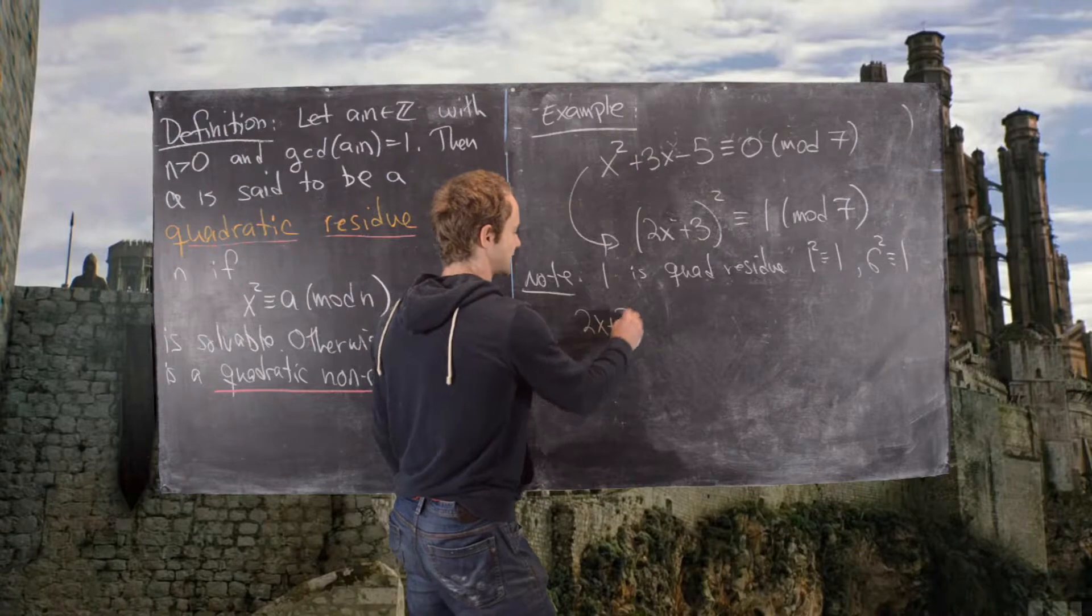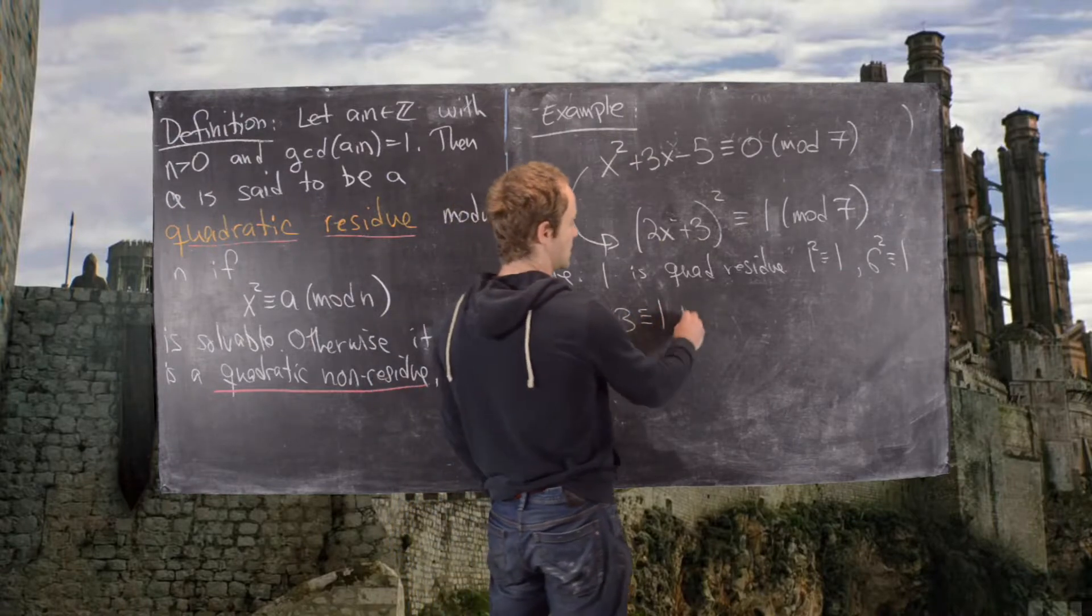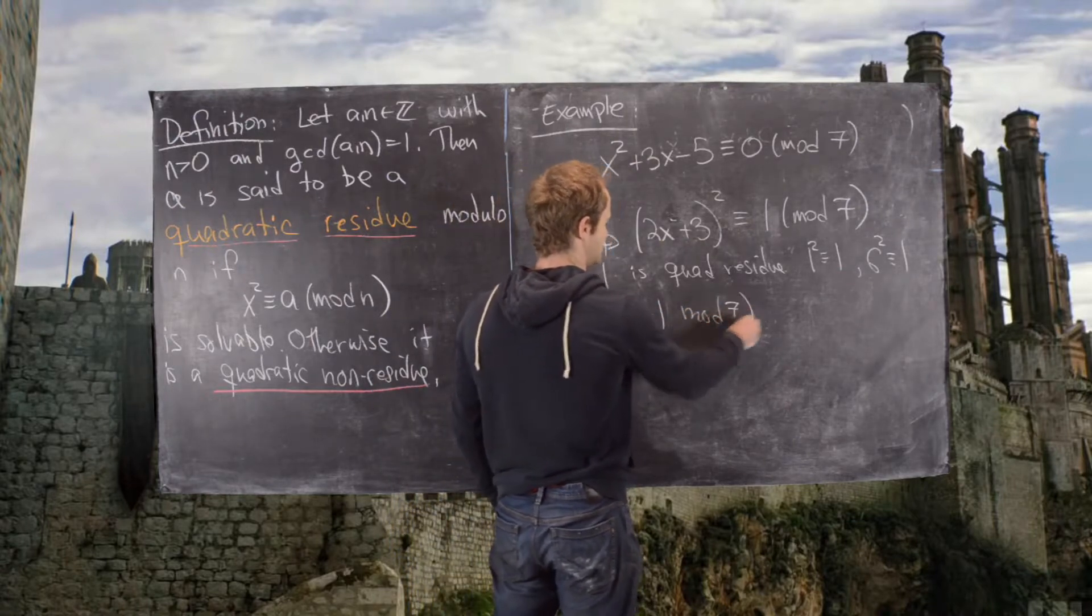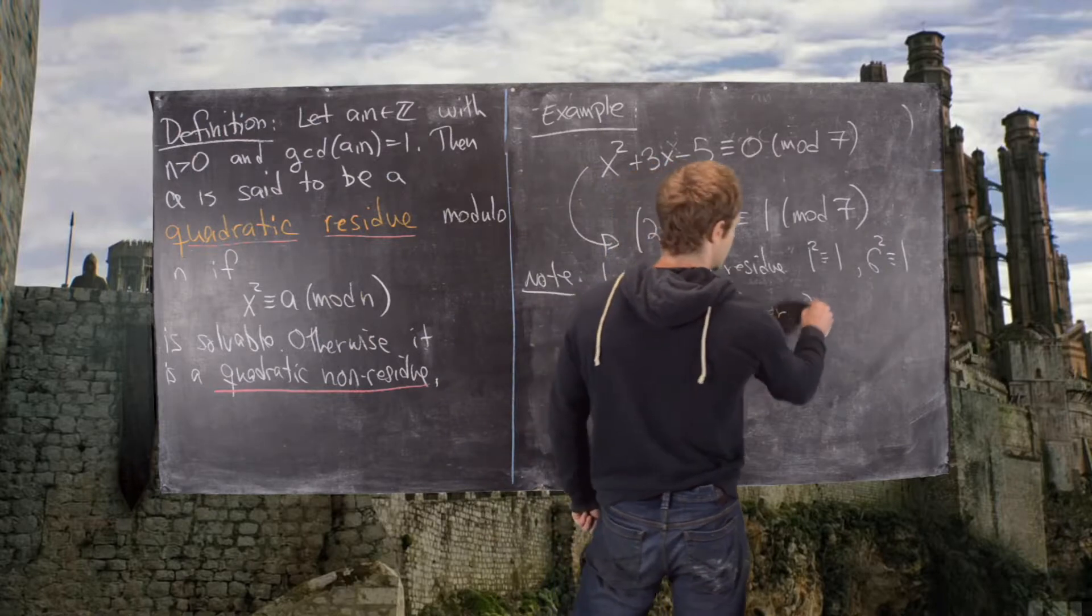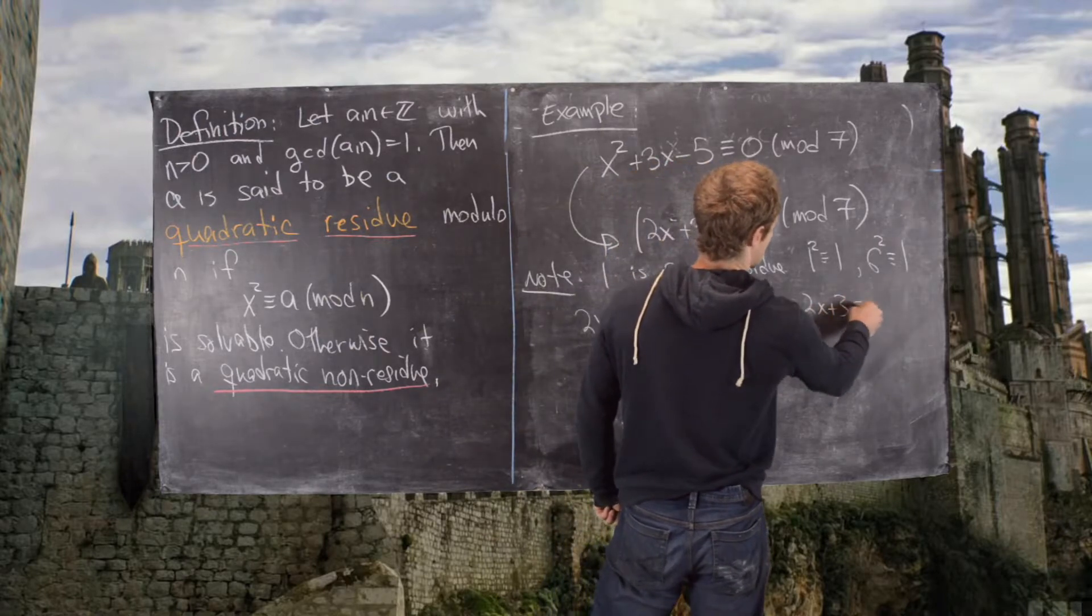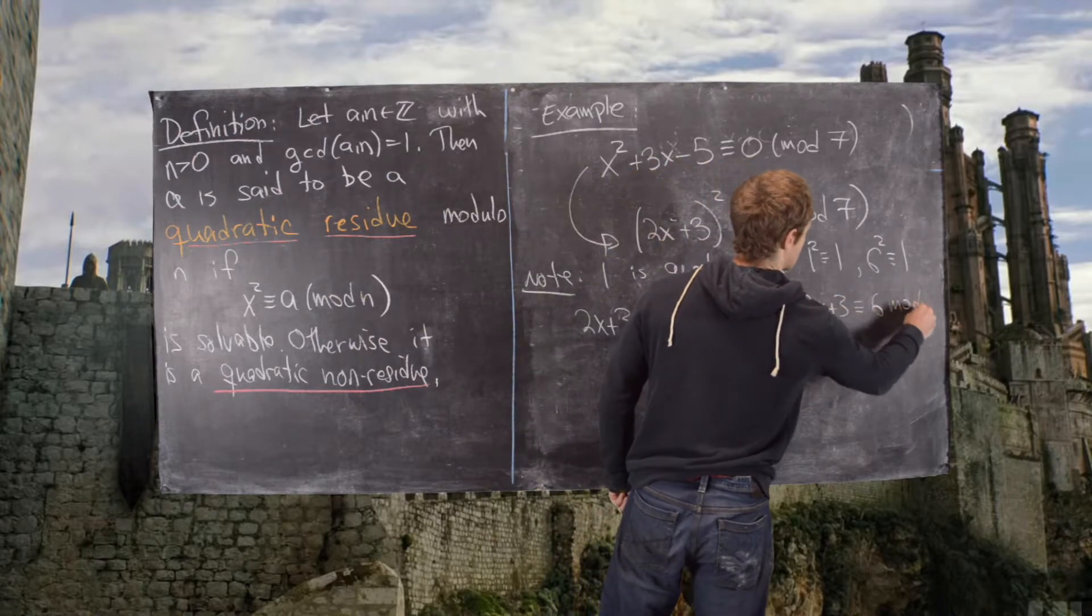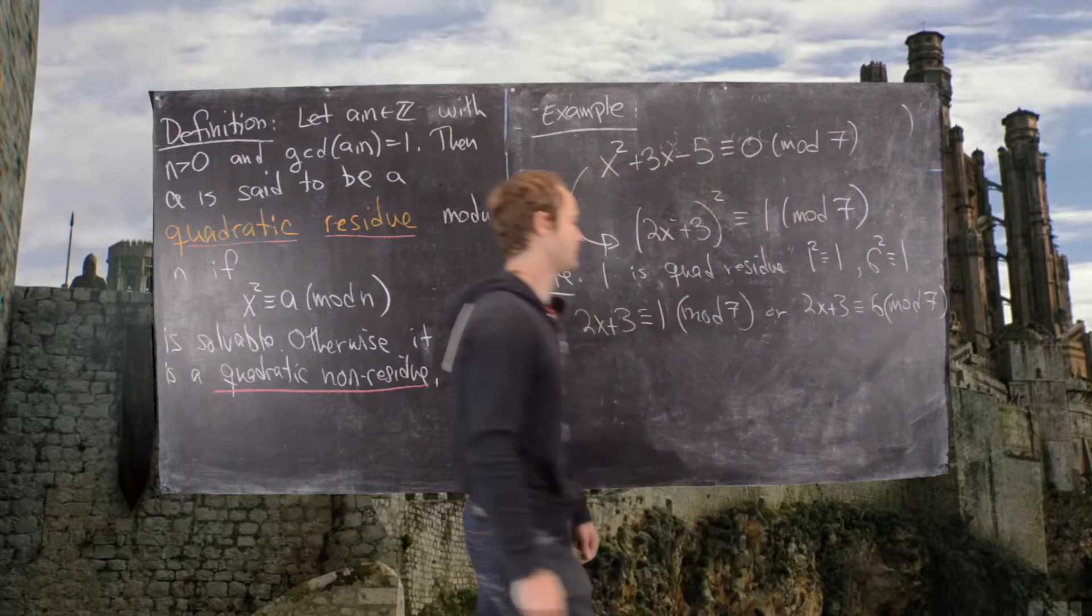We get 2x plus 3 is congruent to 1 mod 7, or 2x plus 3 is congruent to 6 mod 7.